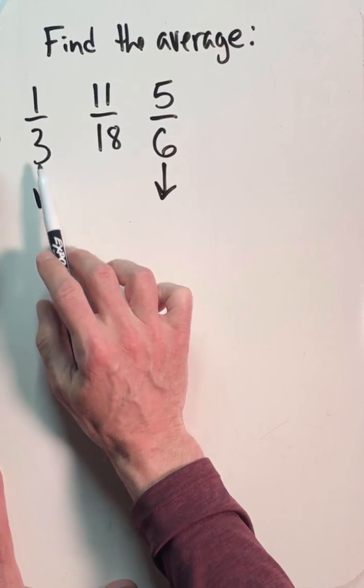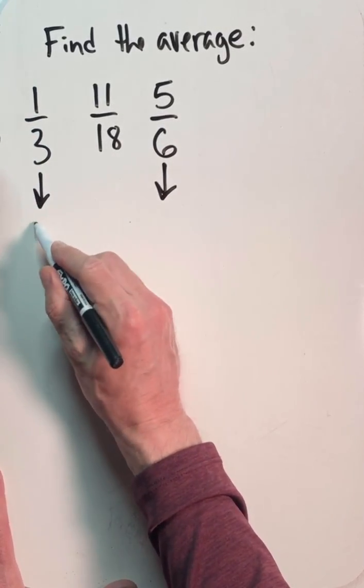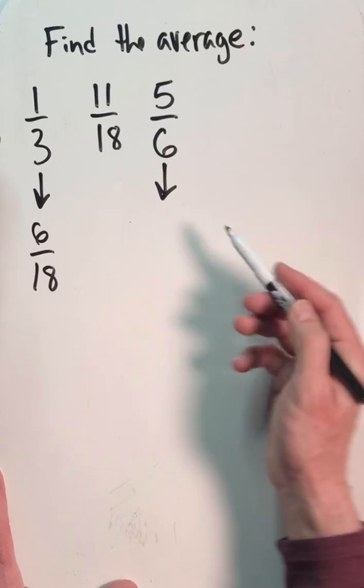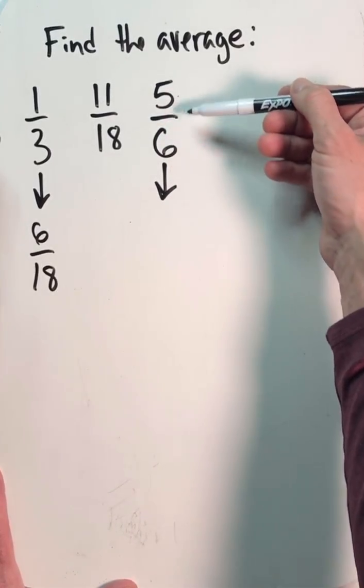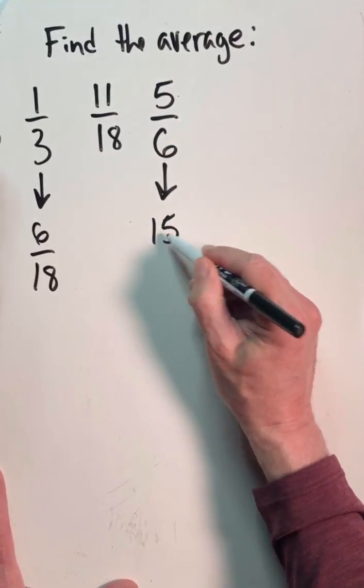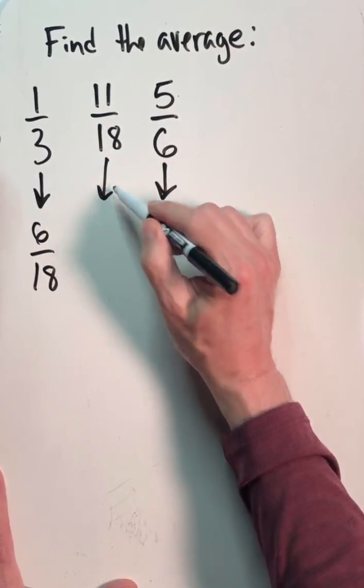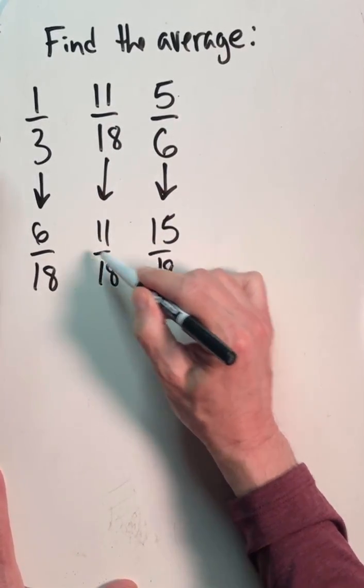Again, we would multiply 1/3 times 6 over 6 to get 6/18. We would multiply 5/6 times 3 over 3 to get 15/18. And the 11/18 we can just bring straight down.